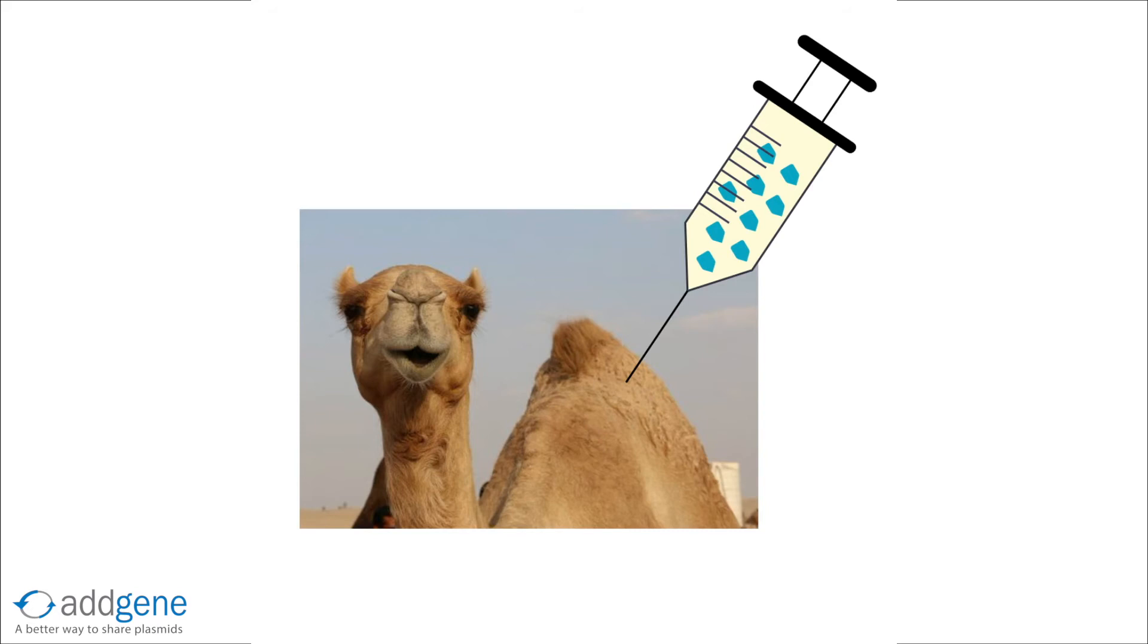First, a camelid is immunized with an antigen of interest to induce antibody production. Next, blood is drawn from the animal and antibody-producing B cells are isolated.